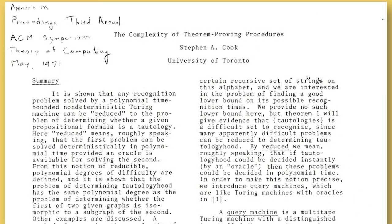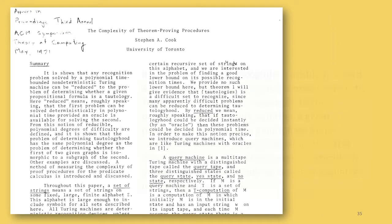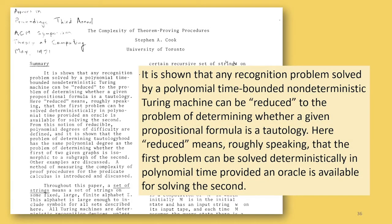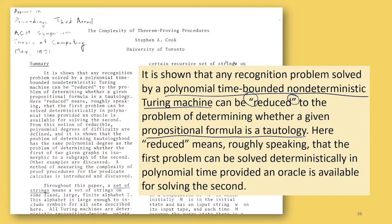This paper is actually quite readable — only about five pages long, and you should be able to understand pretty much everything in it. The abstract says: it is shown that any recognition problem solved by a polynomial time-bound non-deterministic Turing machine can be reduced. Back in 1971, 'reduced' had to be put in quotes because reductions weren't yet an accepted concept. What he reduces it to is determining whether a formula is a tautology — which is different from what we call the Cook-Levin theorem today, which involves 3-SAT.